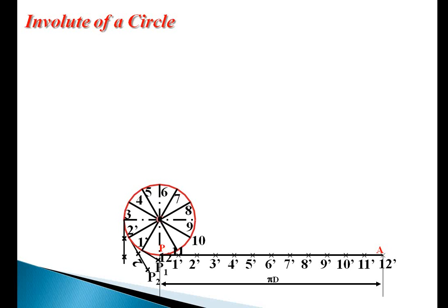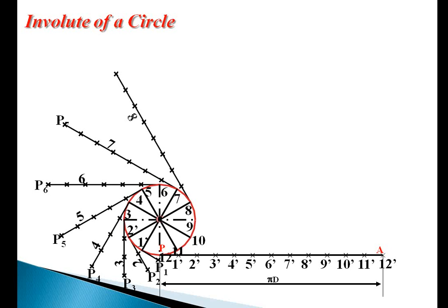Similarly, at 3 draw a line perpendicular to C3 line. The length of 3P3 equal to P to 3 dash.